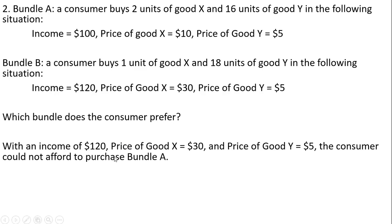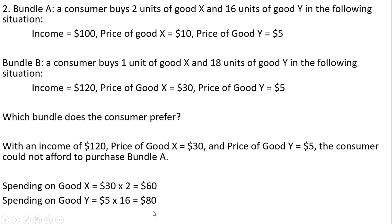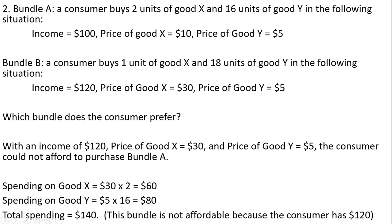With an income of $120, the price of good X at $30, and the price of good Y at $5, the consumer could not afford to purchase bundle A. The spending on good X would be 30 times 2 units, that's $60. The spending on good Y, 5 times 16, is $80. That's $140 total, but this consumer only has $120.